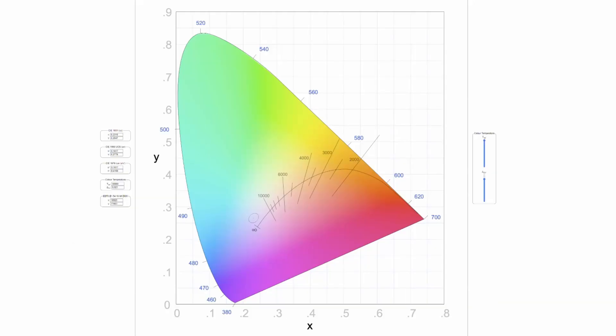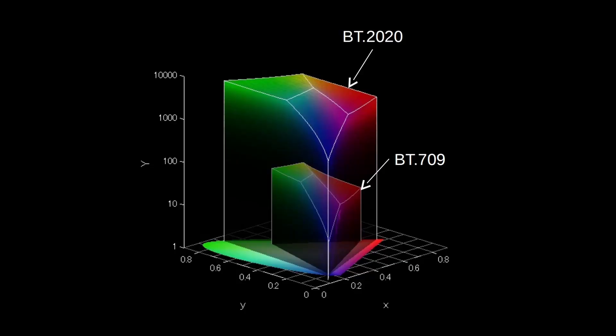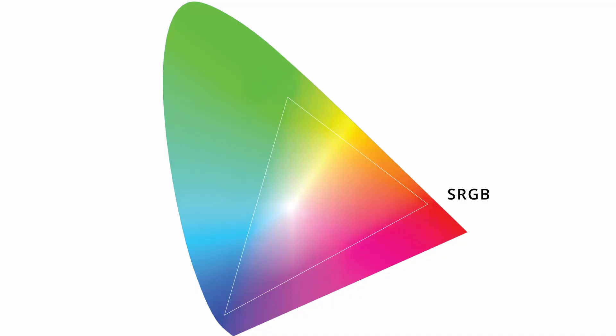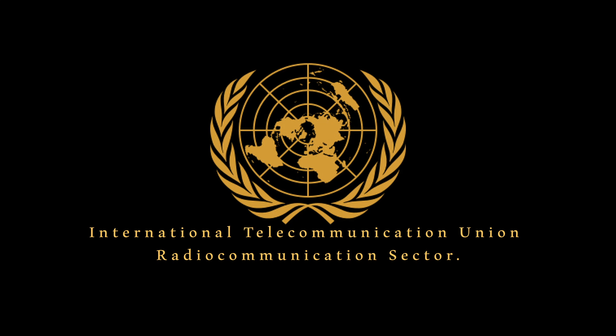You can think of the color gamut as a color palette you can choose from when creating an image. The wider the color palette, the richer the image you can create, and vice versa. Color gamut acts as a language to define colors. Of course, as with languages, there are many different types. To ensure that industry players use the same language to define colors, industry groups such as the International Telecommunication Union Radio Communication Sector, or ITU-R, periodically establish specific color palettes using their peers.